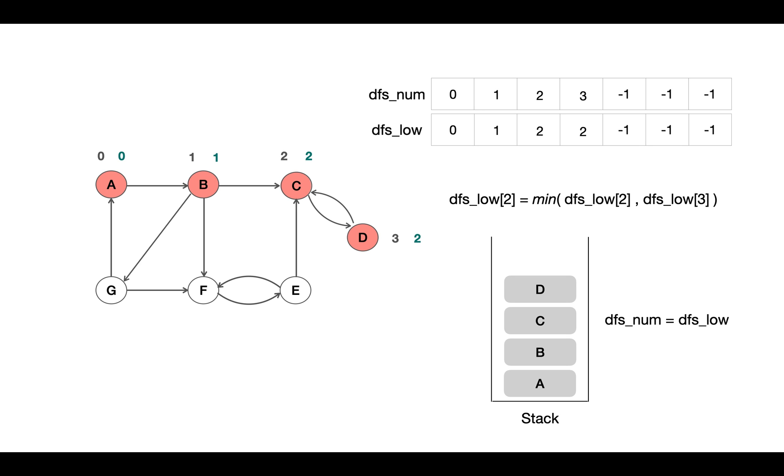Here we also need to check whether DFS_num and low values are equal after visiting all neighboring vertices. If they are equal, it means we got back to the node where we started. That means we got a strongly connected component.